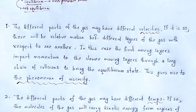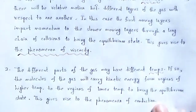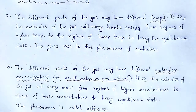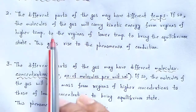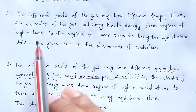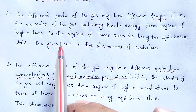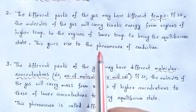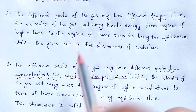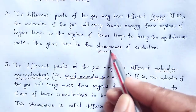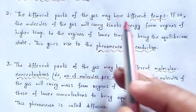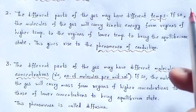Second, the different parts of the gas may have different temperatures. If so, the molecules of the gas will carry kinetic energy from regions of higher temperature to regions of lower temperature to bring the gas to equilibrium state. This leads to the phenomenon of conduction, as different parts of the gas have different temperatures.